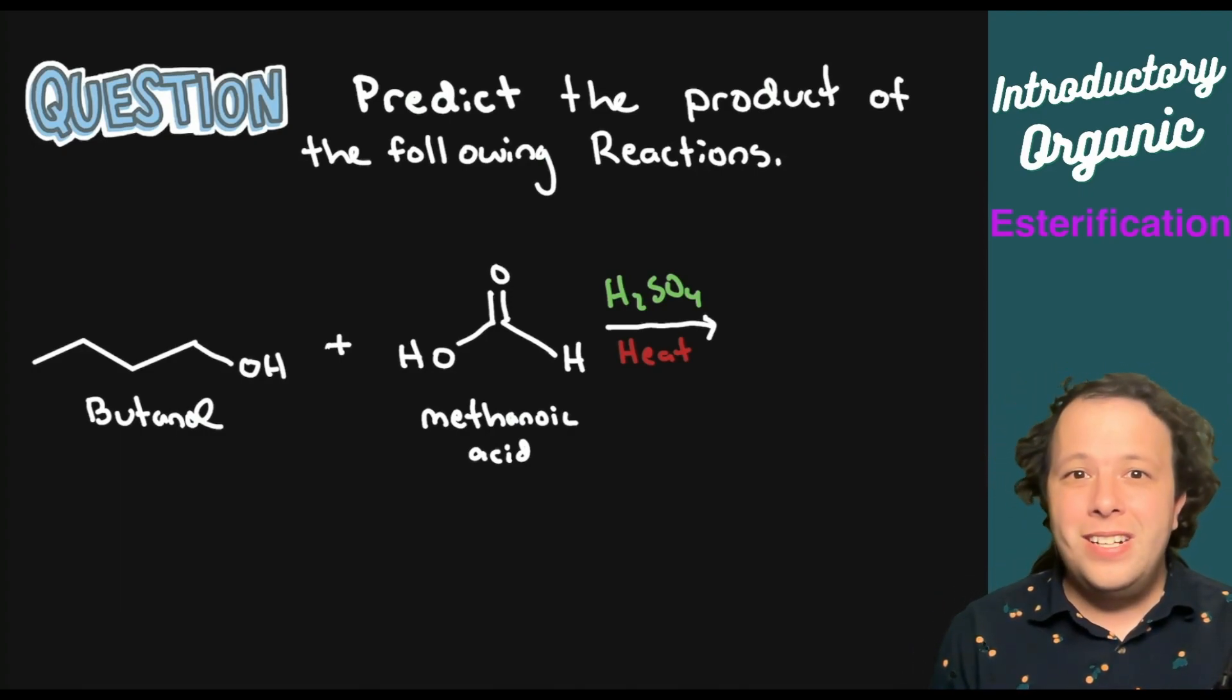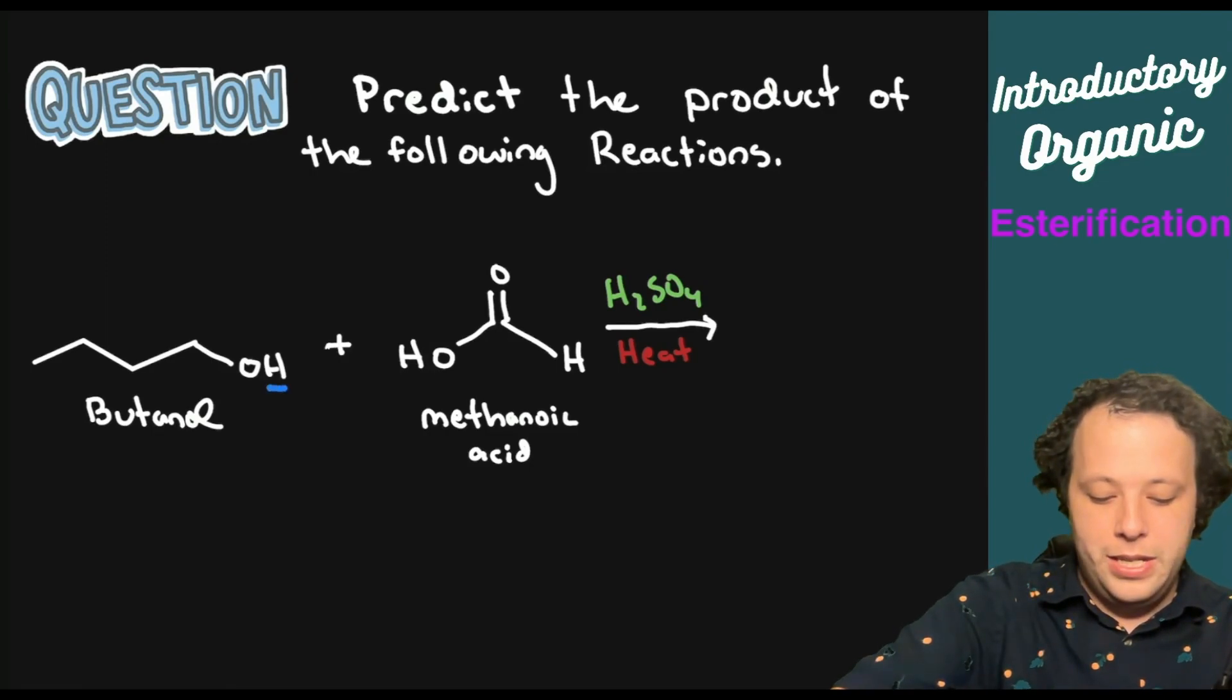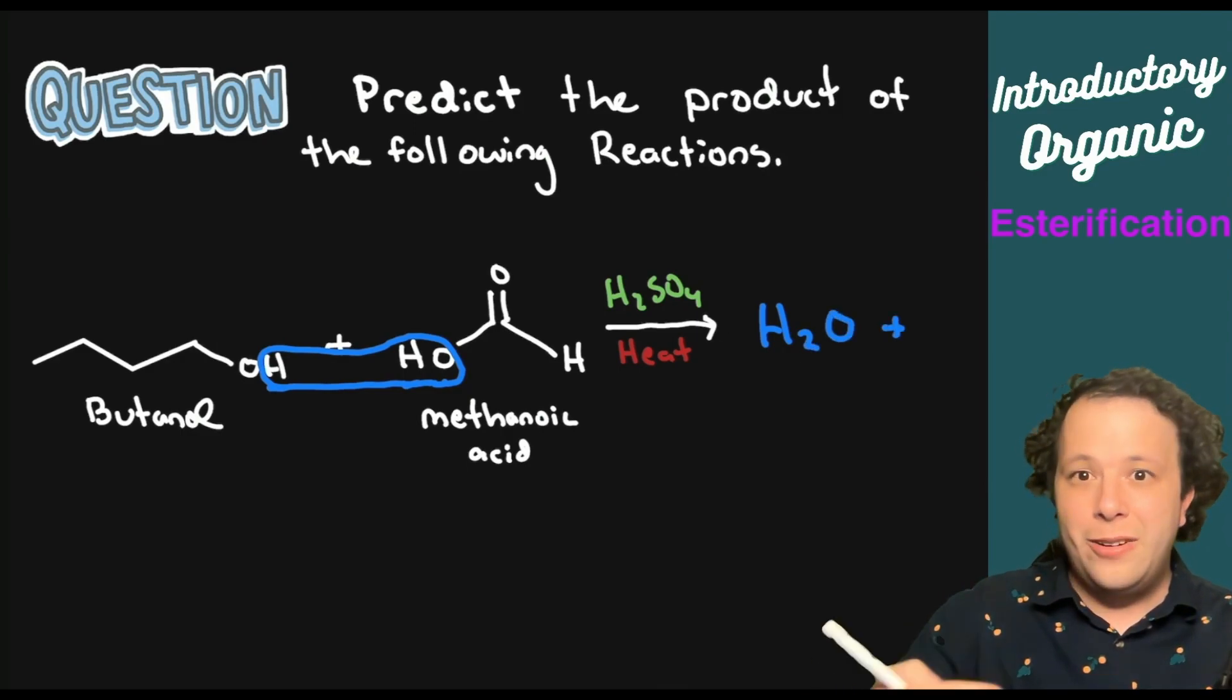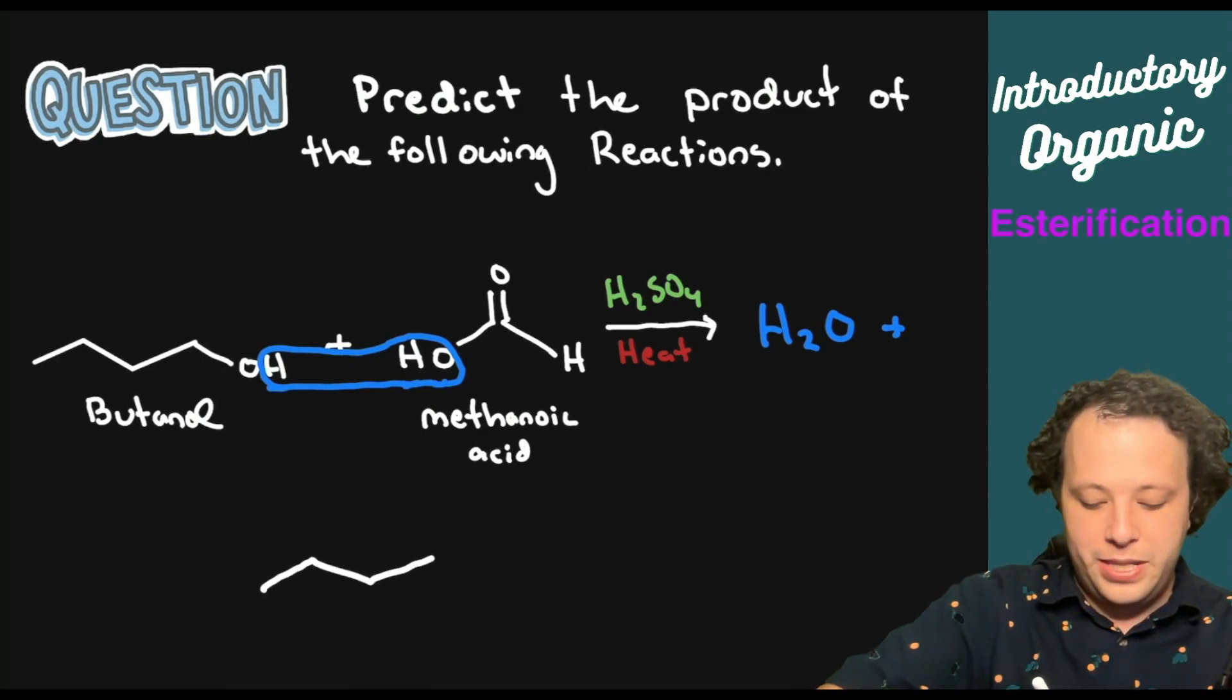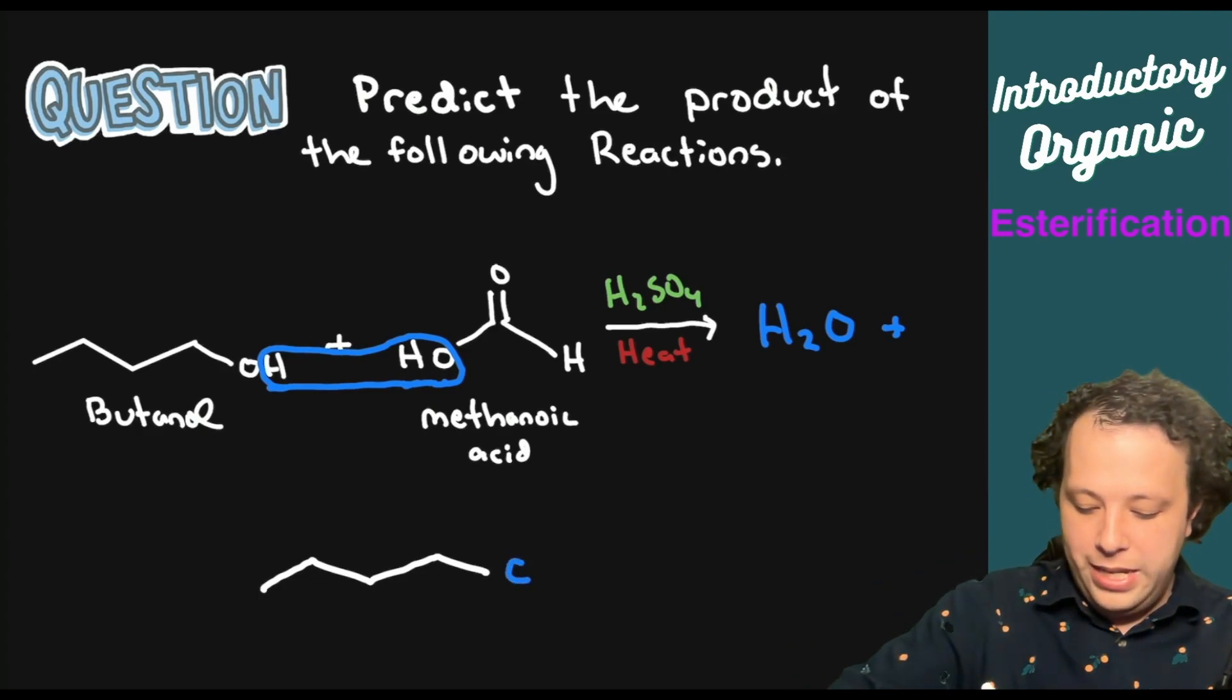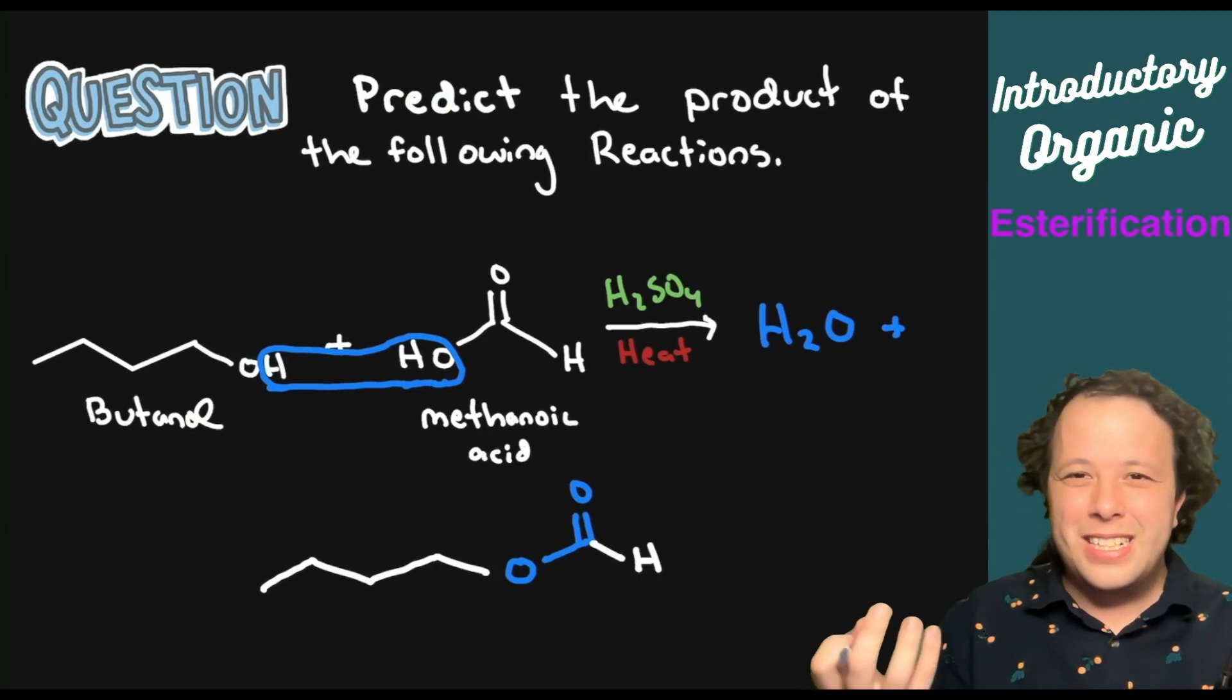So with this one, it's butanol and methanoic acid are going to be reacting together. So as before, we're going to be taking it where we remove the water component. So we have H2O is what is going to be removed. So the water is going to come off and be one of our products of our final reaction. Now, when these two are coming together, we'll keep our carbon chain. So we still have the four carbons from the alcohol.